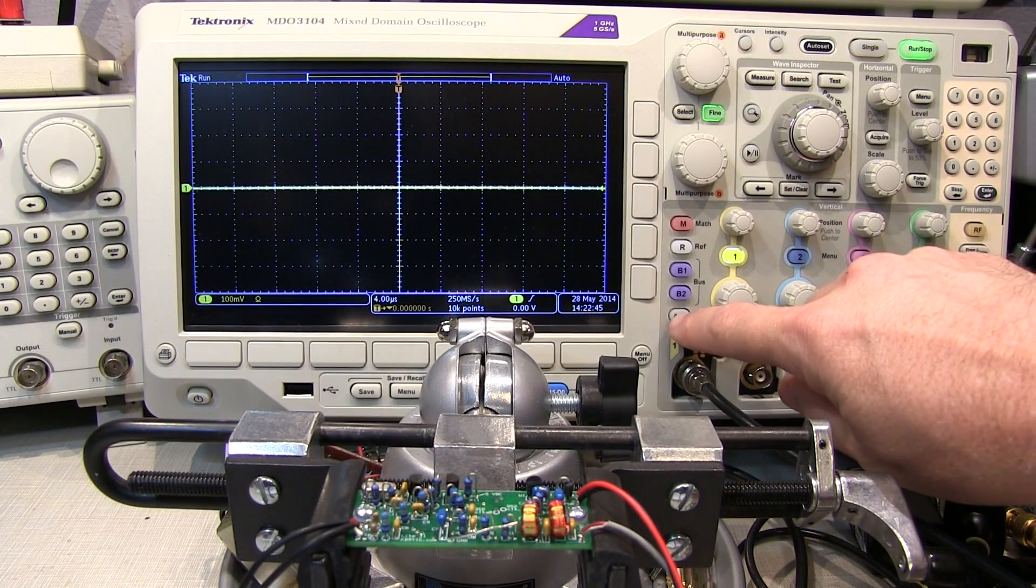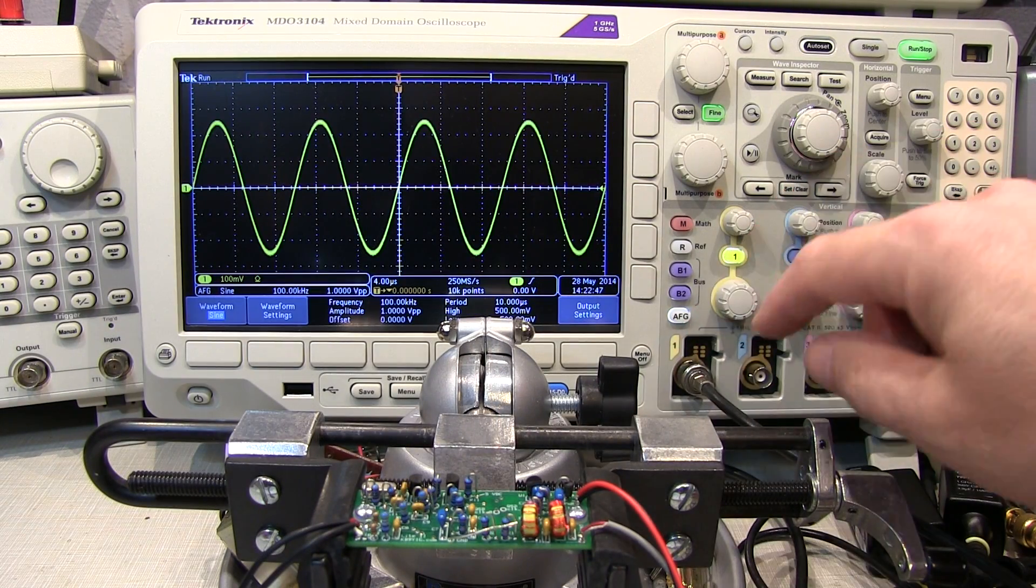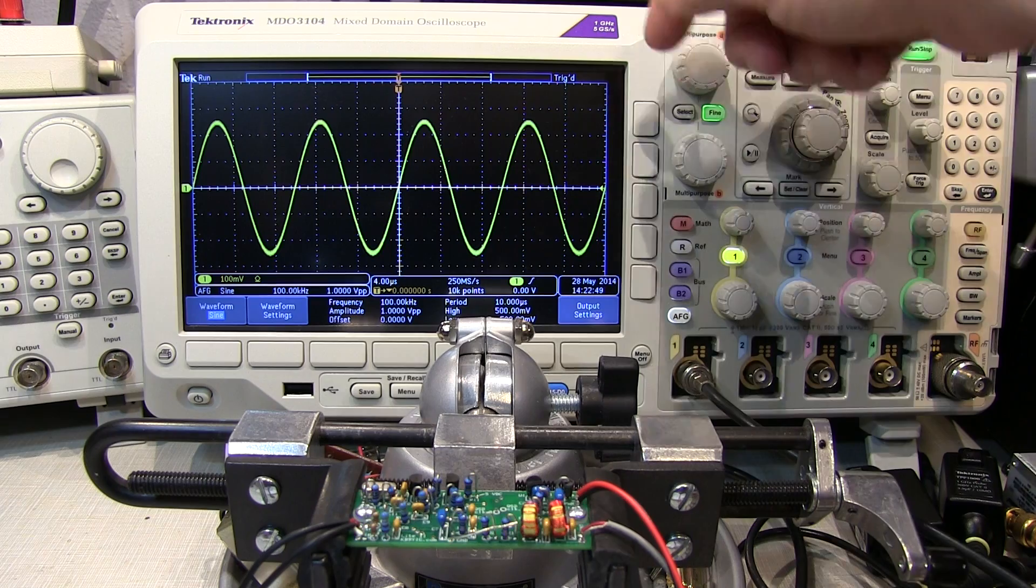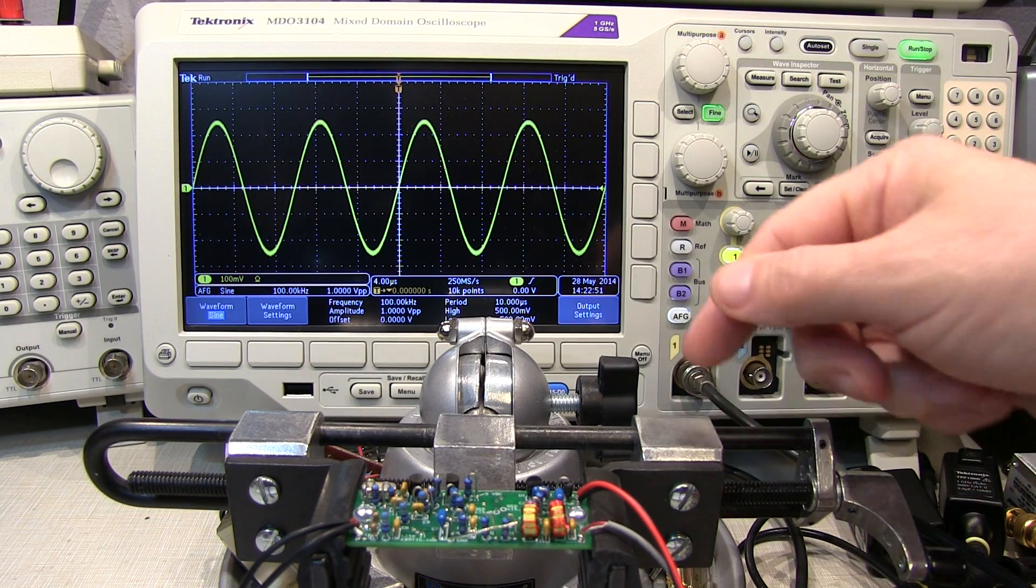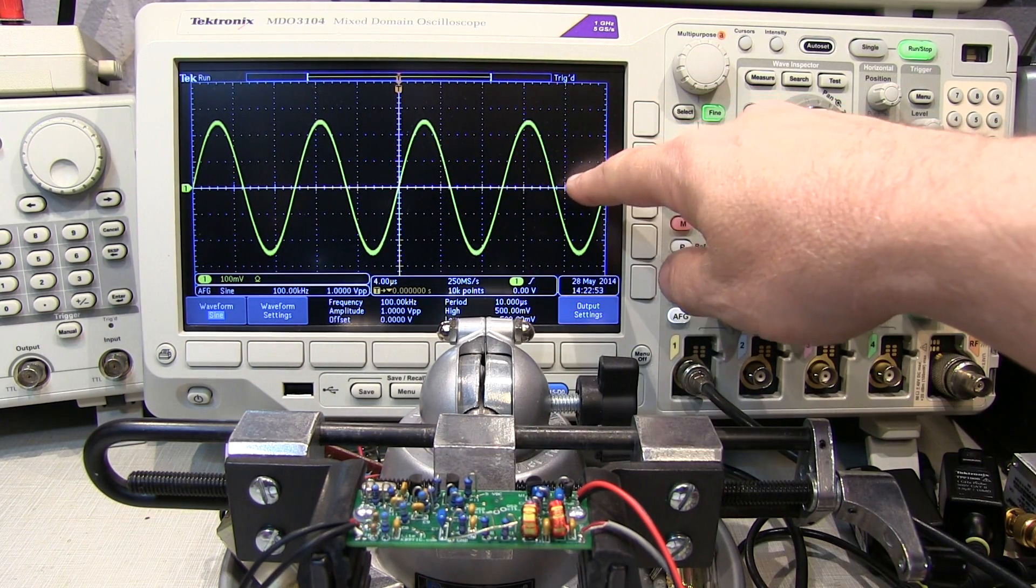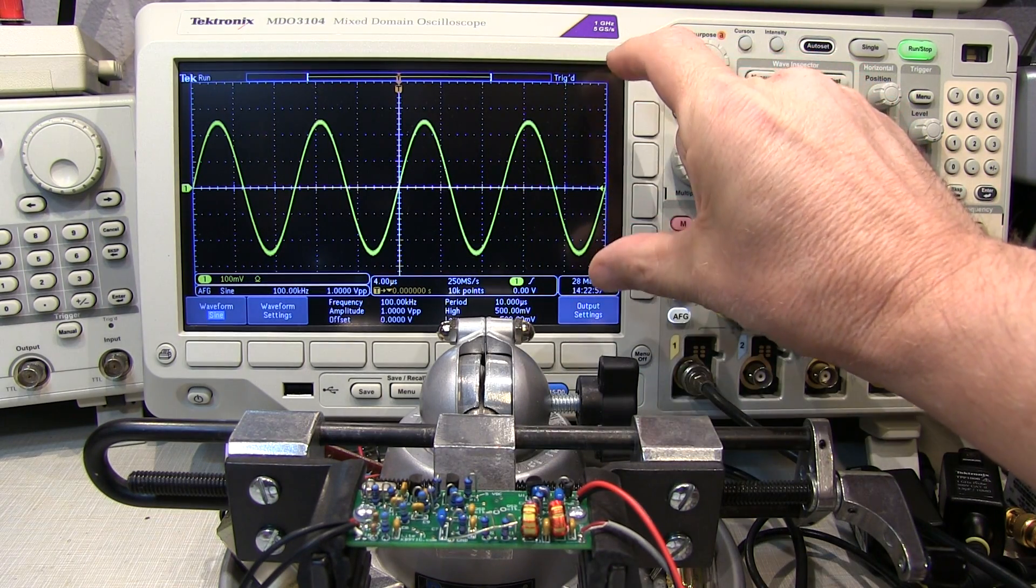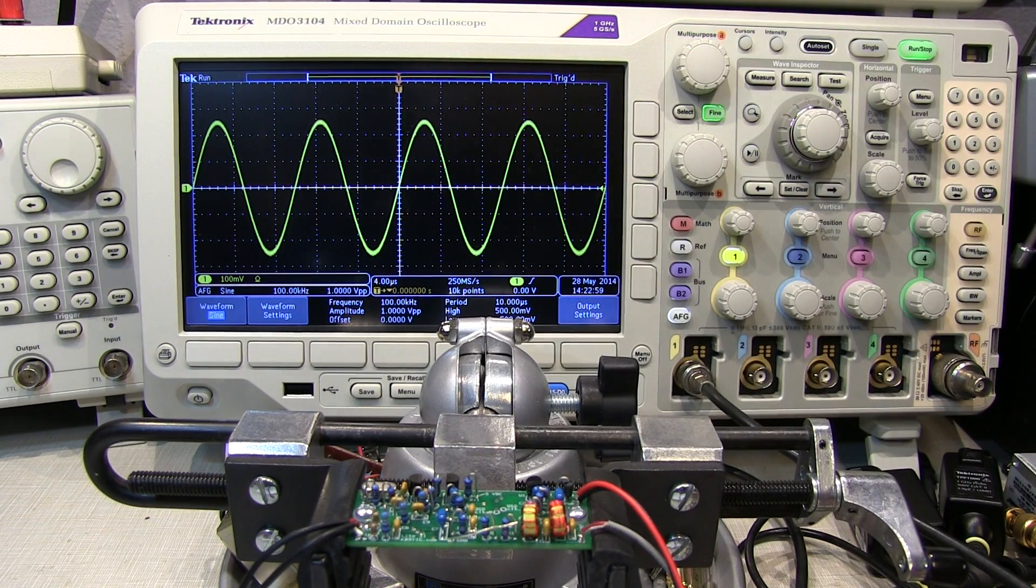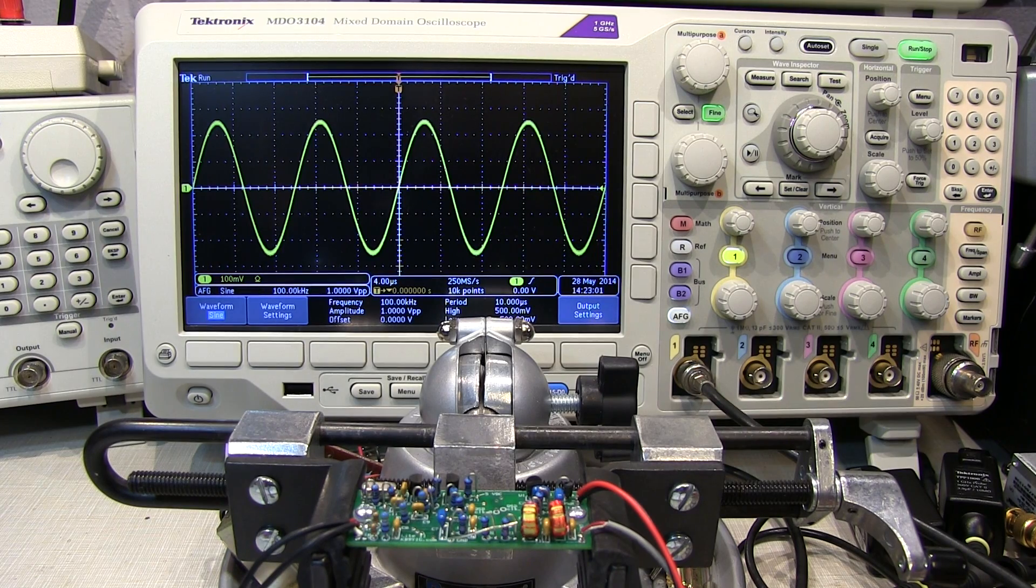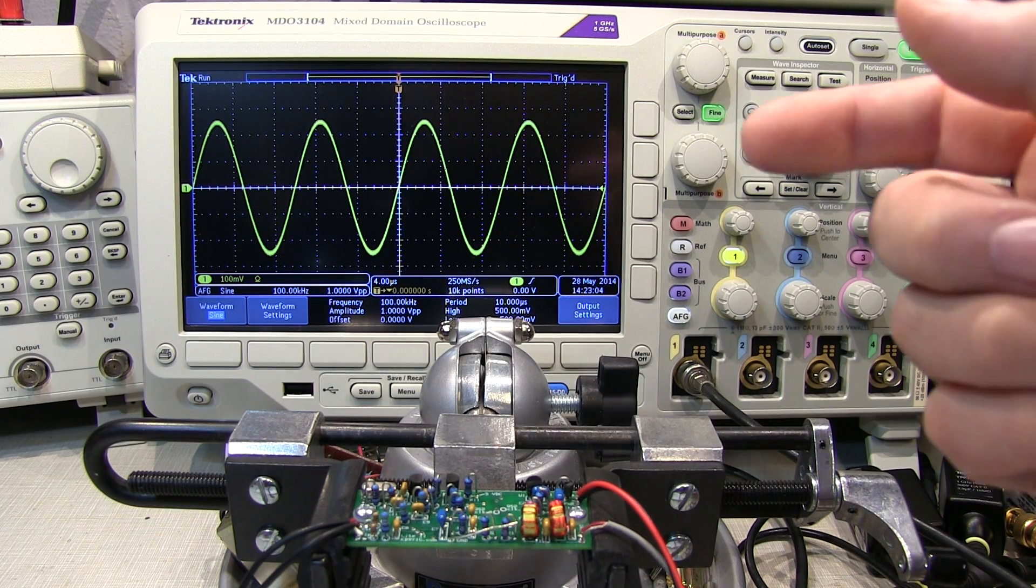Probably the most obvious way would be to use a signal generator to generate a sine wave, apply that to the input of the filter, and then change the frequency of the sine wave and observe the output of the filter and how its amplitude varies as you change the frequency. That's largely a manual process, but we're going to do it a little bit differently here.